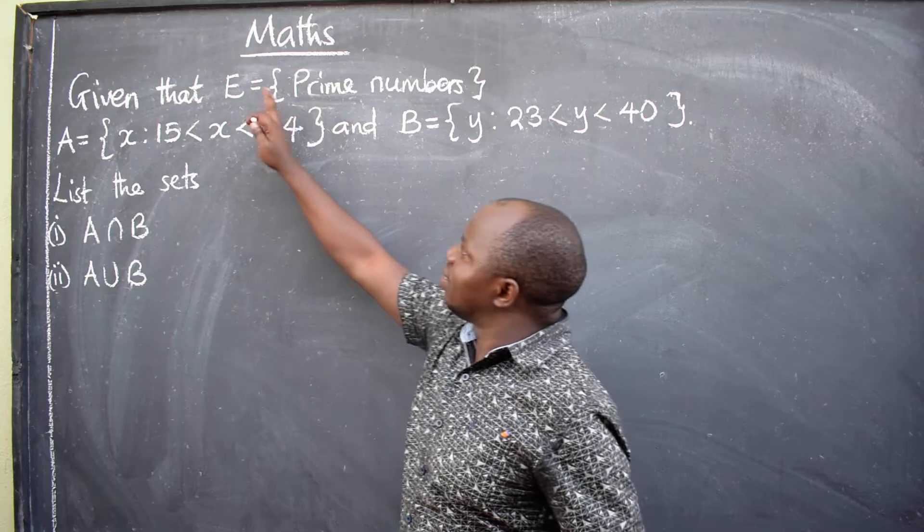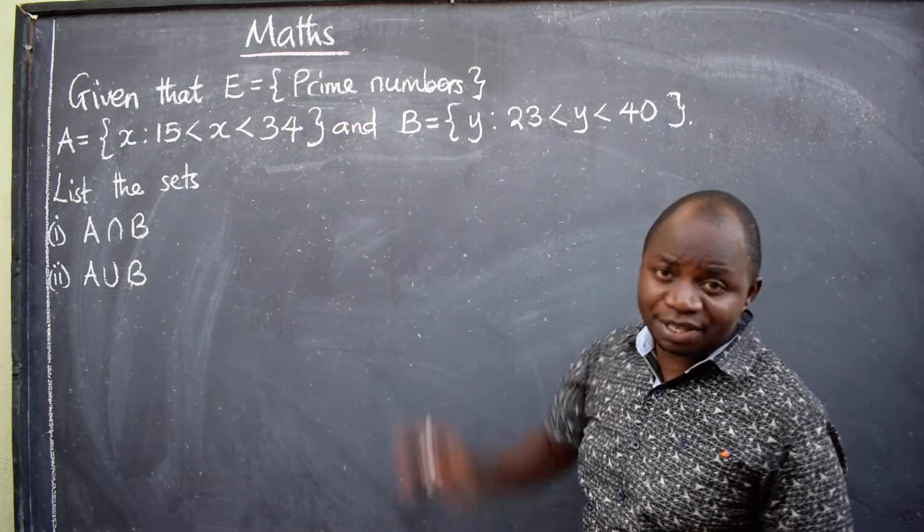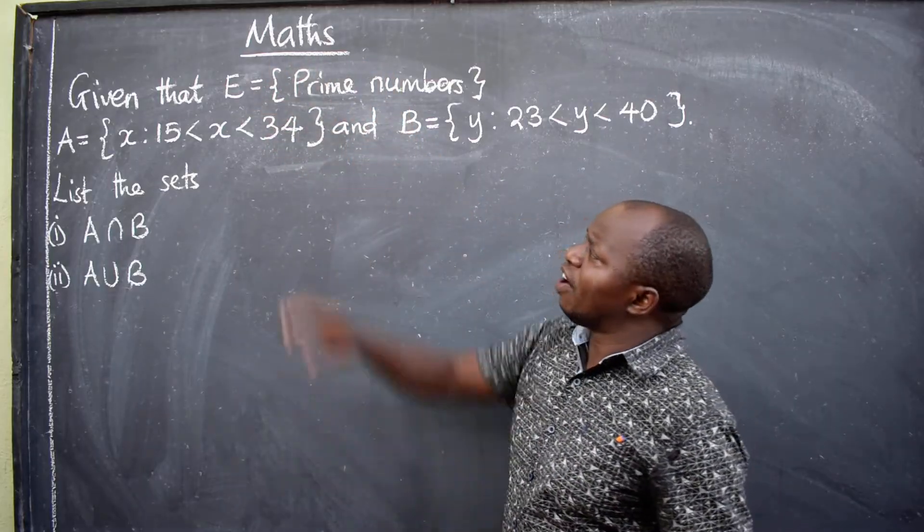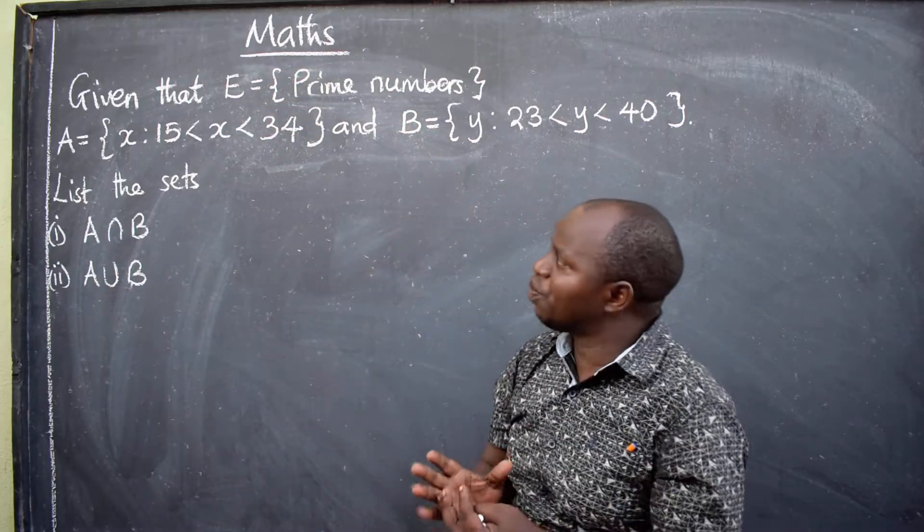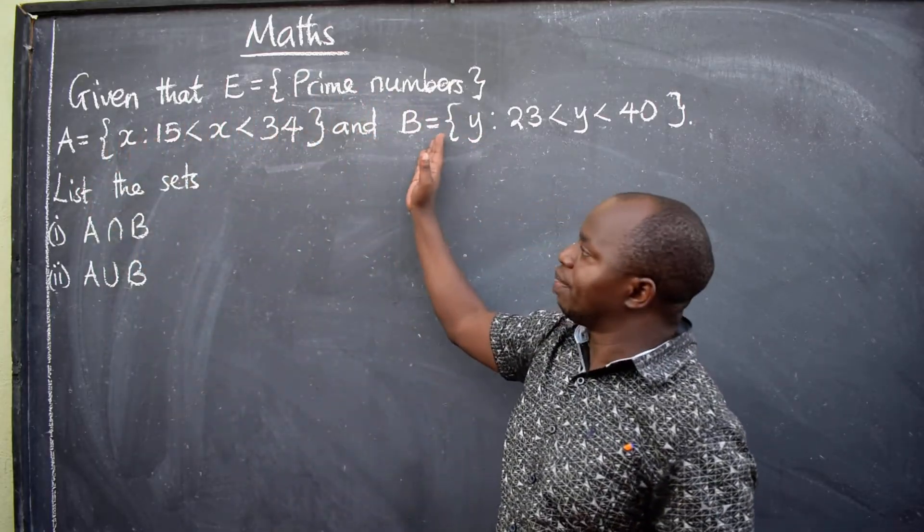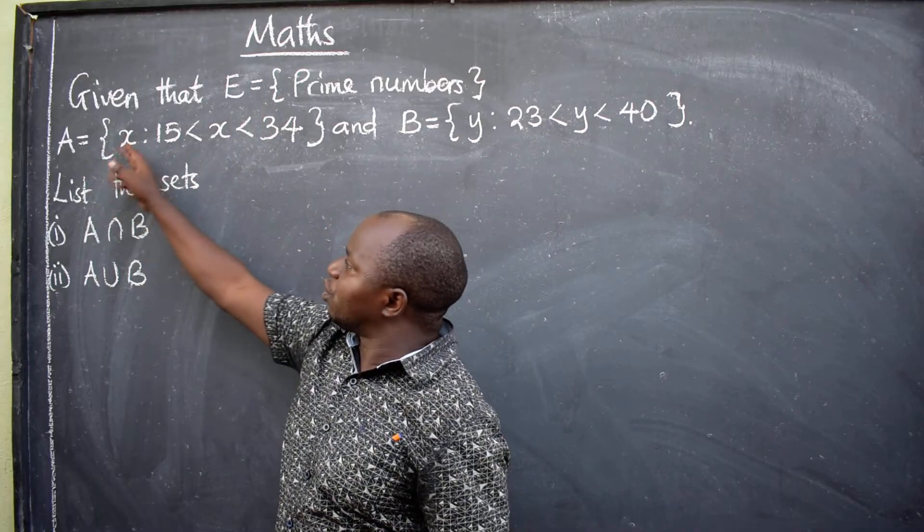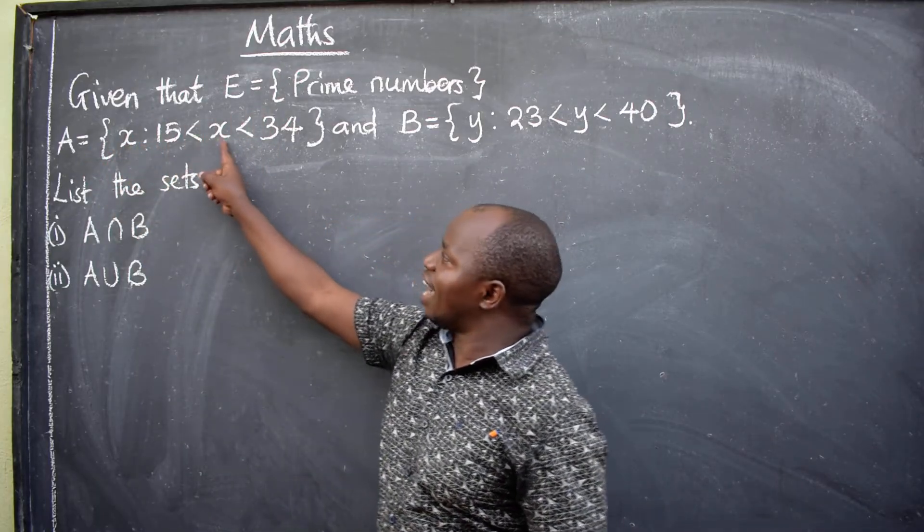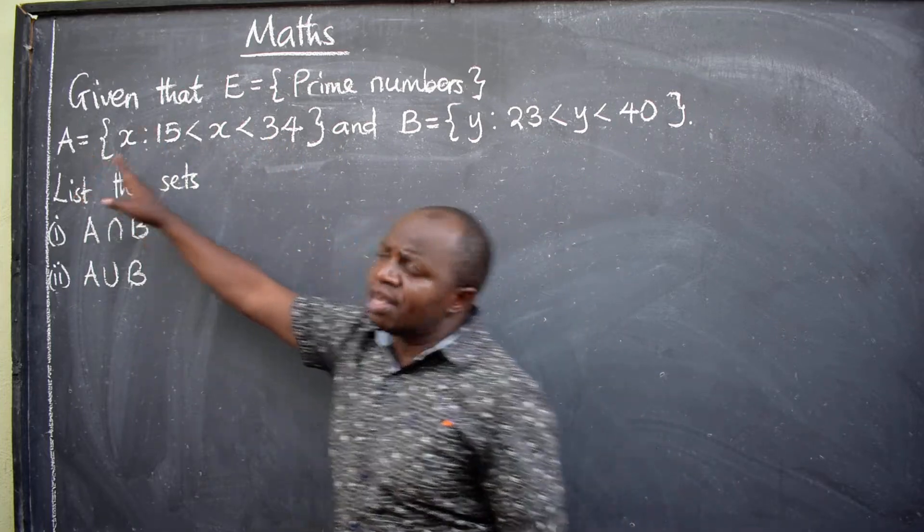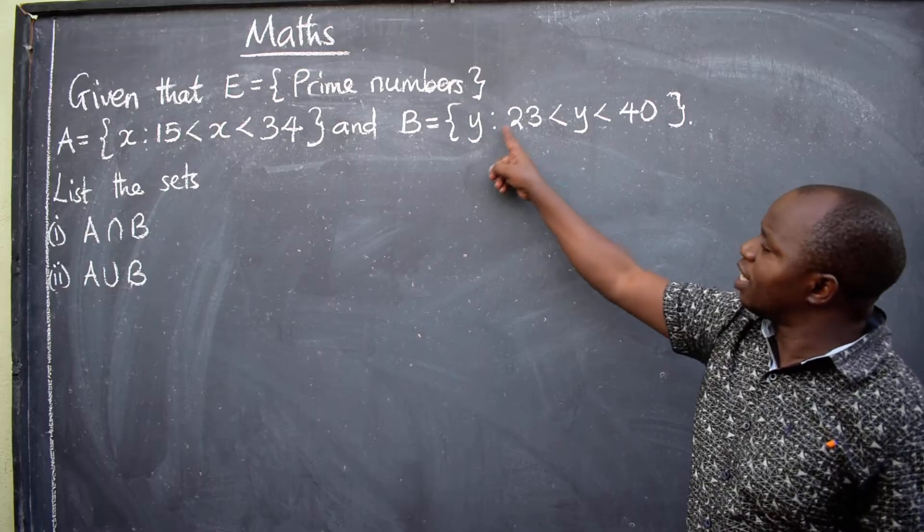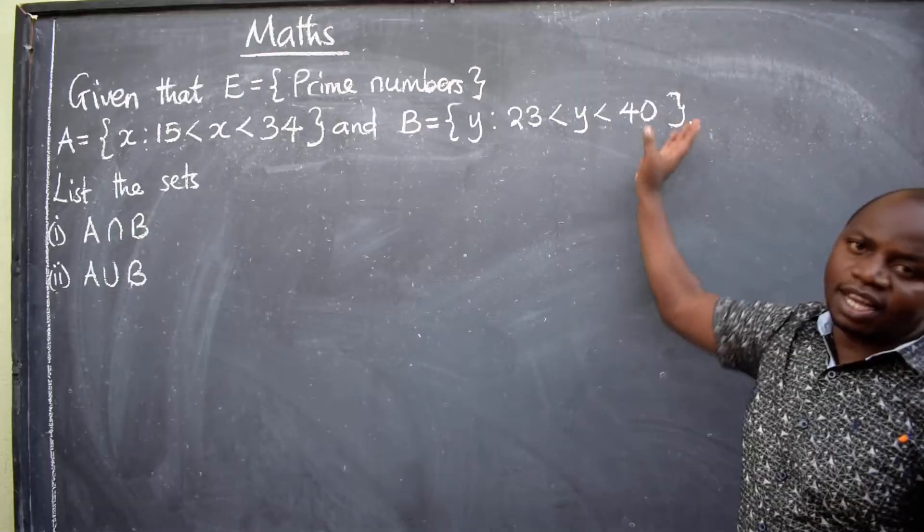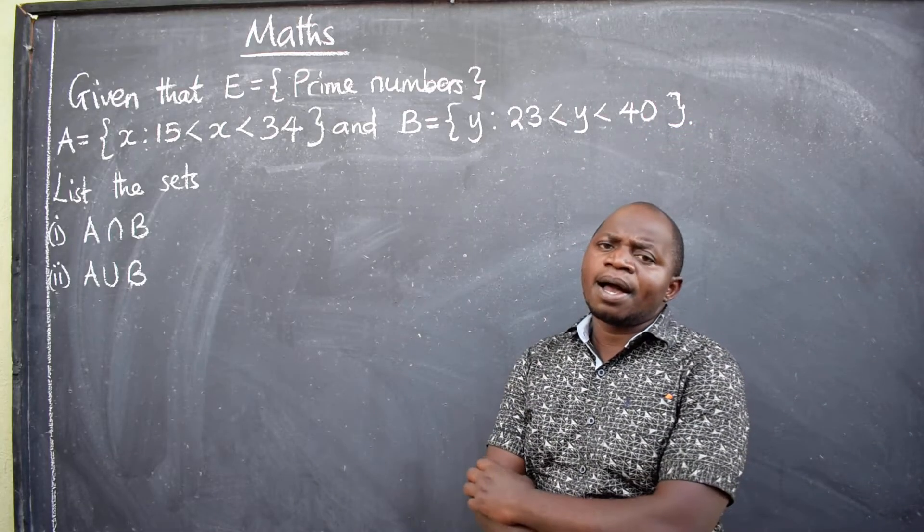Given that E is equal to the set of prime numbers, that is our universal set or the universe. Now under this universal set we've got two sets. We have set A and B. Set A is equal to X such that 15 is less than X, less than 34. That is our set A. Then in set B we have Y such that 23 is less than Y, less than 40. That is our set B.